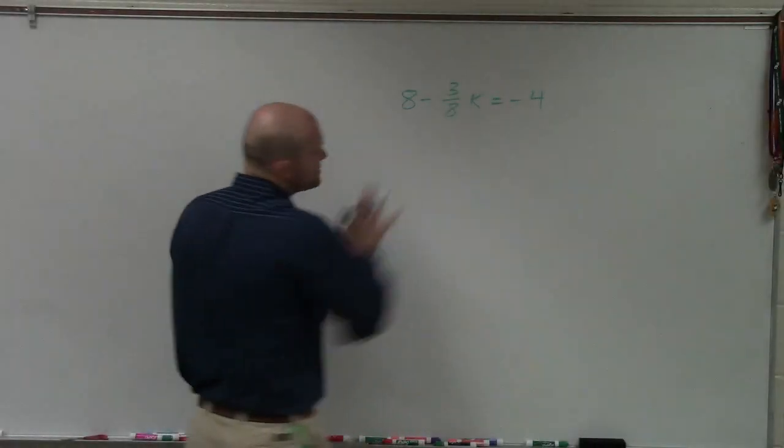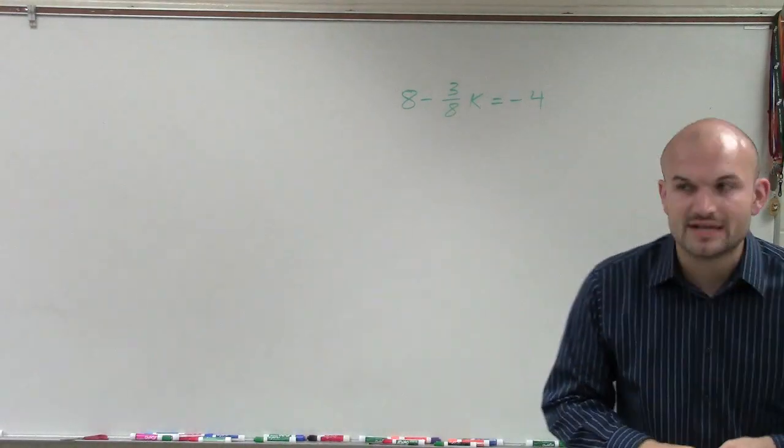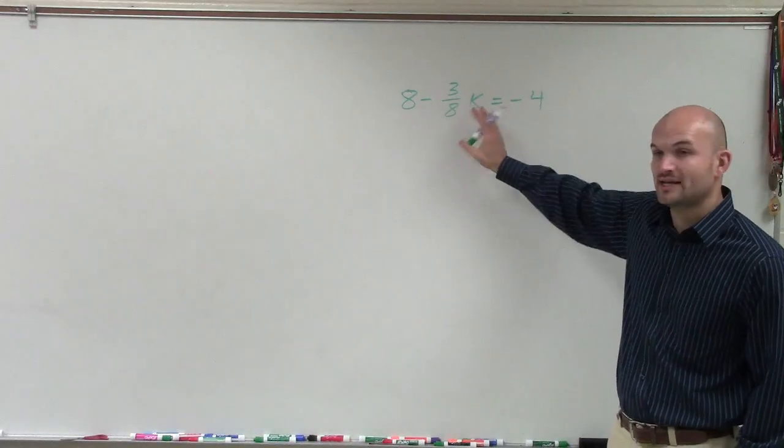Ladies and gentlemen, if I had an equation like this: 8 minus negative 3/8 k equals negative 4, what we need to do is isolate the variable. We need to get our k by itself.